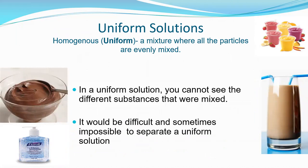First, we have uniform solutions, also known as homogeneous, which is a mixture where all the particles are evenly mixed. In a uniform solution, you cannot see the different substances that were mixed. Also, it would be difficult and sometimes impossible to separate a uniform solution. A few examples of a uniform or homogeneous solution would be pudding, hand sanitizer like Purell, fruit smoothies, and chocolate milk or Ovaltine — which is my favorite.